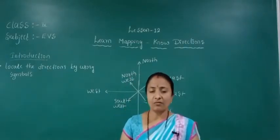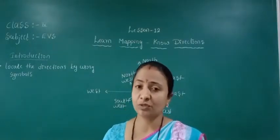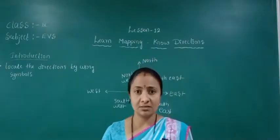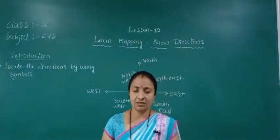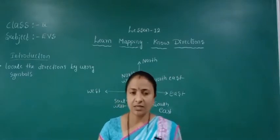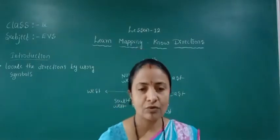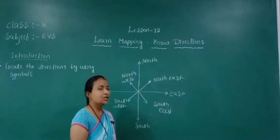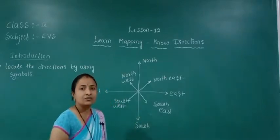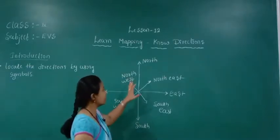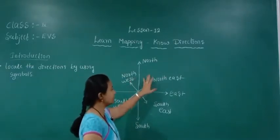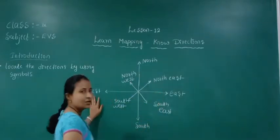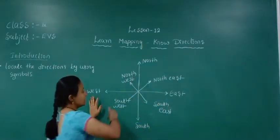We will learn how to use symbols to show directions, and which place is in which direction. Before going into this lesson, first we will understand the four main directions: north, east, south, and west. These are the directions.